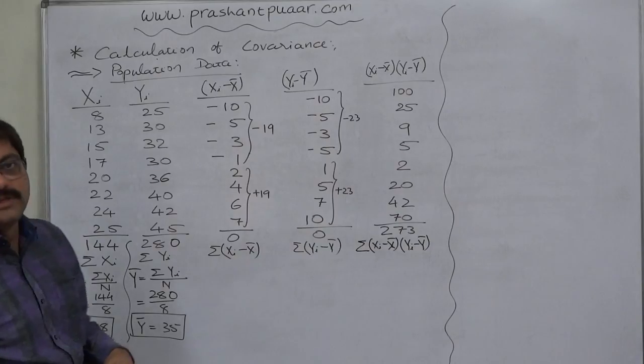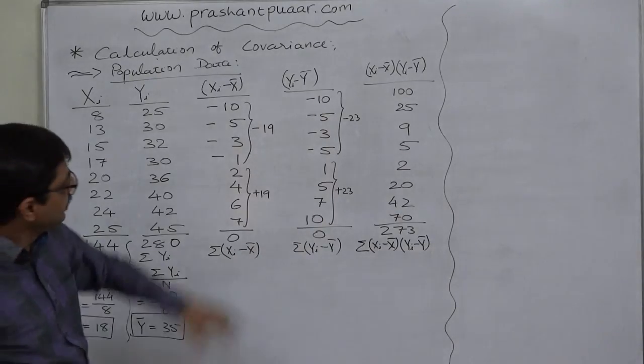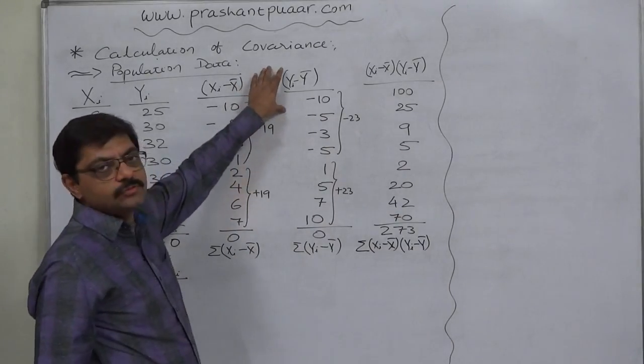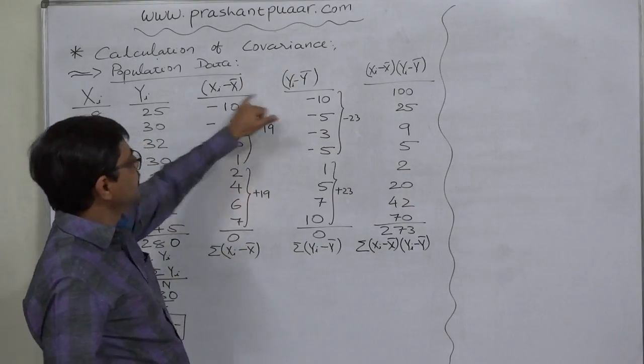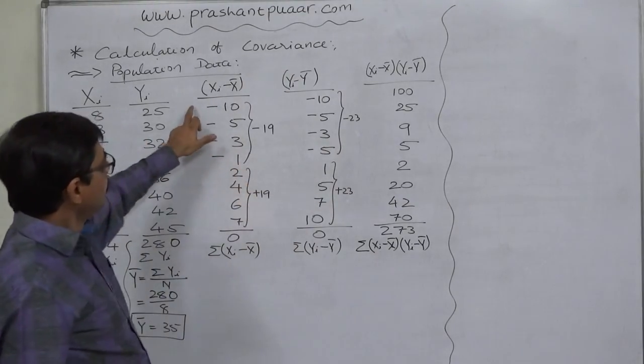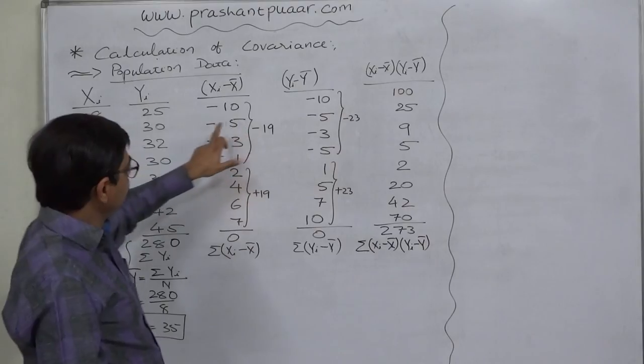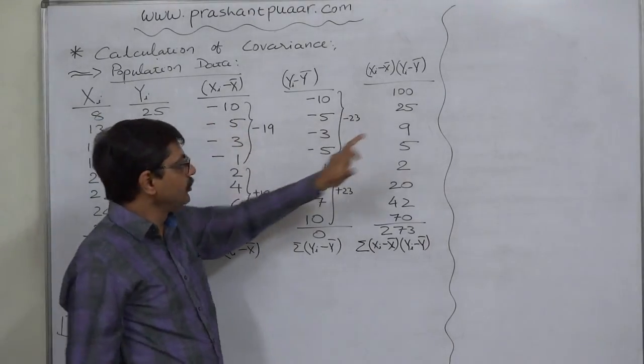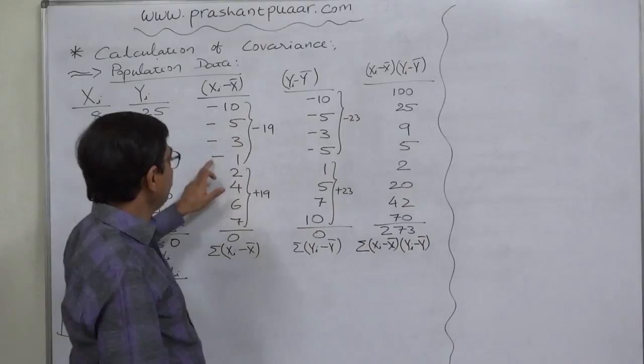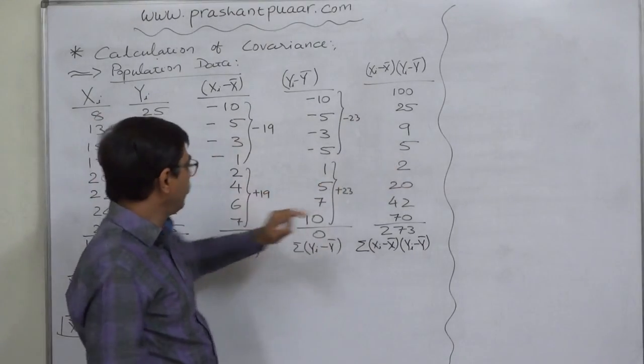Now, the simple step is product of the deviations taken from mean. That means we need to multiply these two, x minus x bar into y minus y bar. Minus 10 into minus 10 positive 100, minus 5 into minus 5 positive 25, minus 3 into minus 3 positive 9, minus 1 into minus 5 positive 5,